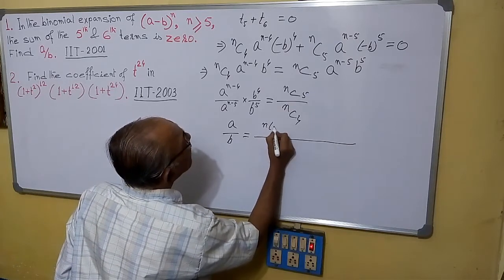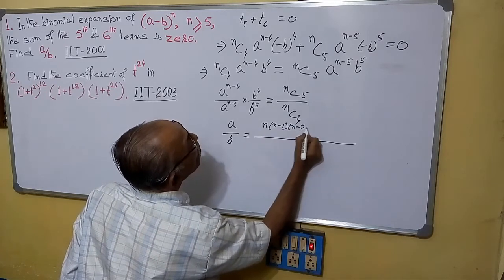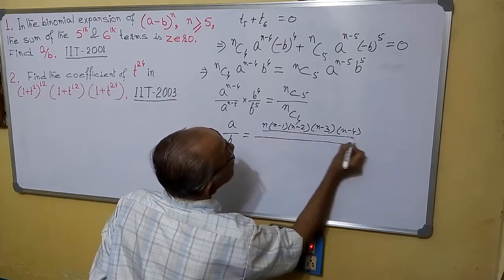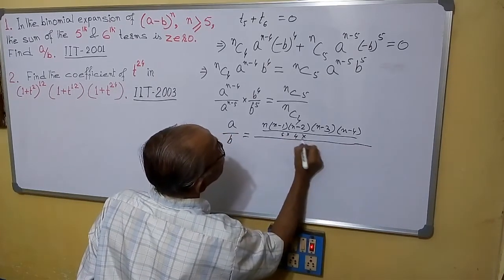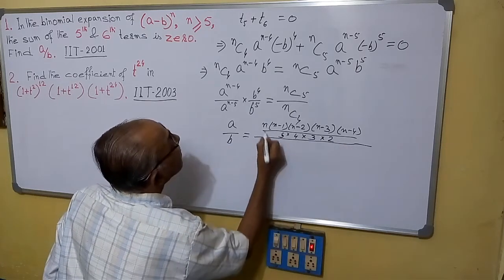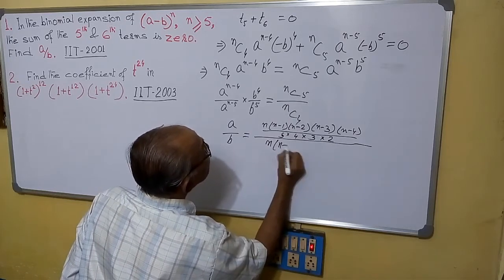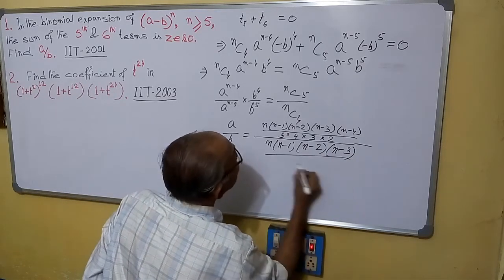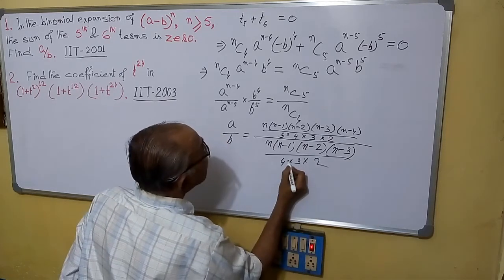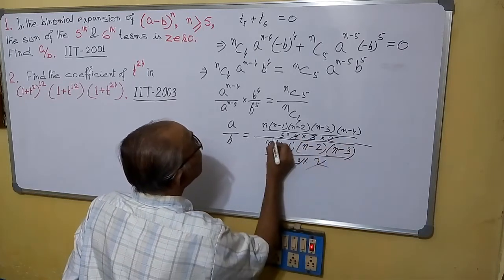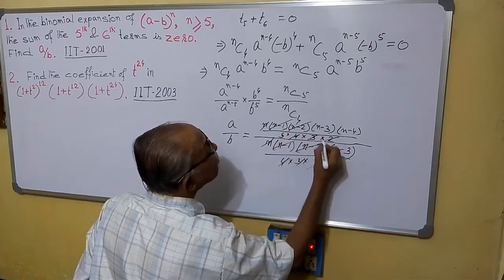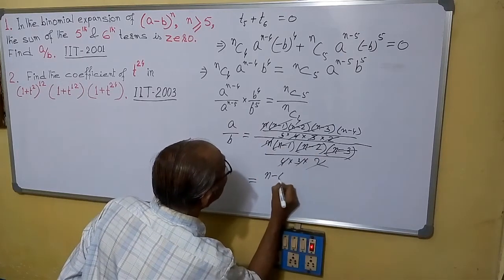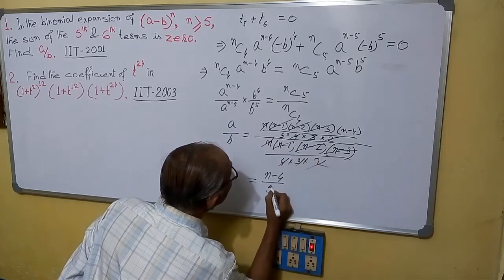Now expanding: nC5 equals n(n−1)(n−2)(n−3)(n−4) divided by 5·4·3·2·1, and nC4 equals n(n−1)(n−2)(n−3) divided by 4·3·2·1. Dividing nC5 by nC4, the common factors n, (n−1), (n−2), (n−3), and 4·3·2 all cancel. What remains in the numerator is (n−4) and in the denominator is 5. So a/b equals (n−4)/5. This is our answer.